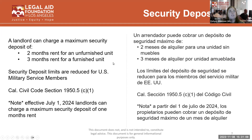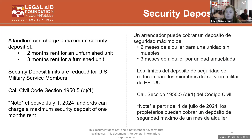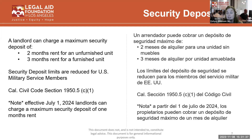There are some limits on how much of a security deposit a landlord is allowed to charge. A landlord can charge a maximum security deposit of two months' rent for an unfurnished unit and three months' rent for a furnished unit. Security deposit limits are reduced below these numbers for U.S. military service members, and the rules for that are explained in Civil Code Section 1950.5.